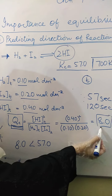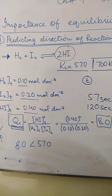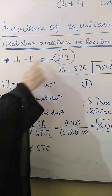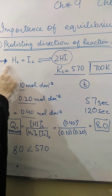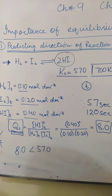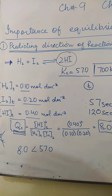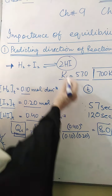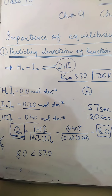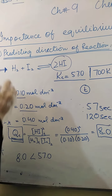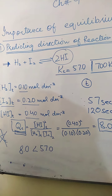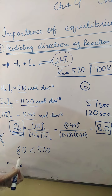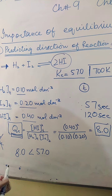When we solve it, we get Qc = 8. There are no units because the number of moles of reactants and products are the same — 1 plus 1 equals 2 on each side, so they are balanced, and units cancel. The answer is 8, but Kc is 57. If Qc had been 57, that would mean the reaction was at equilibrium. But Qc is 8, which is far less than Kc of 57.